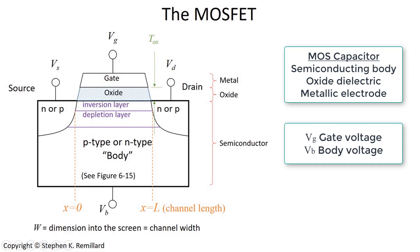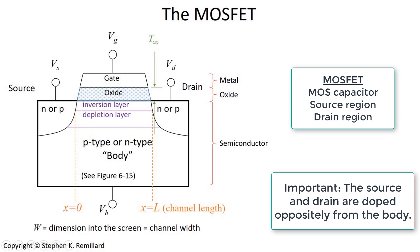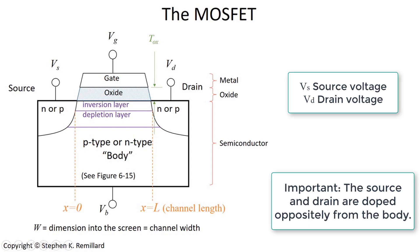What's different in the MOSFET is that we're adding these two side regions here of semiconductor, called the source and the drain. They're N or P-type depending on what the body is. If the body is P-type, the source and the drain will be N-type. If the body is N-type, the source and the drain will be P-type. And we attach electrodes to the source and drain with voltages V_S for source and V_D for drain.